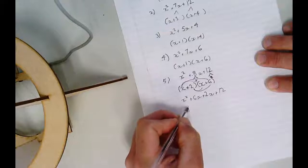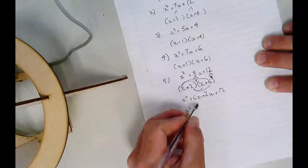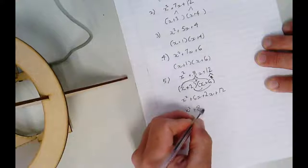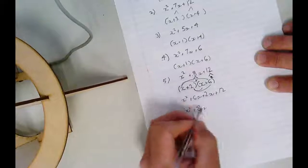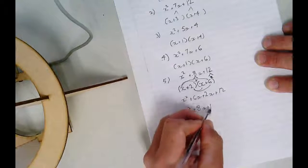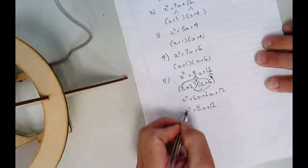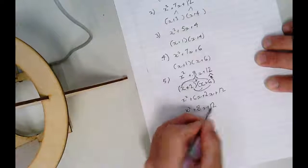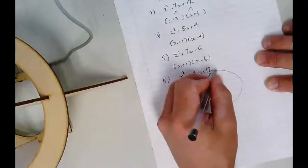x squared's got no mates. 6x plus 2x is 8x. And 12 at the end there. He's got no mates, so he's by himself. So x squared plus 8x plus 12, that should be just what we had to start with. It is. So give myself a tick. Well done.